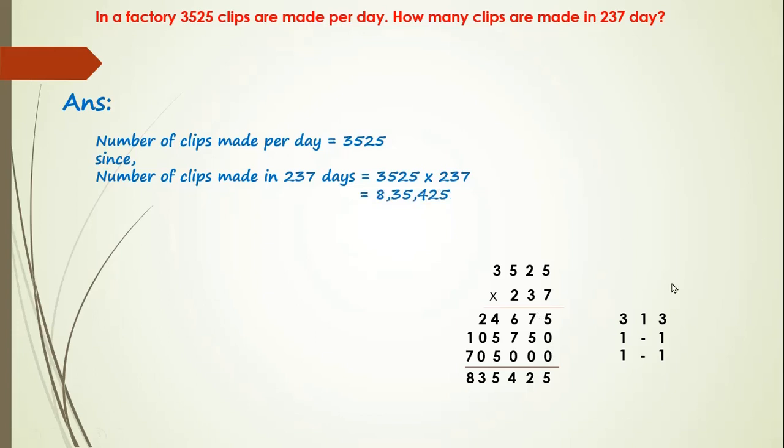Therefore, the number of clips produced in 237 days equals to 835,425. Hence, answer is 835,425. Thank you.